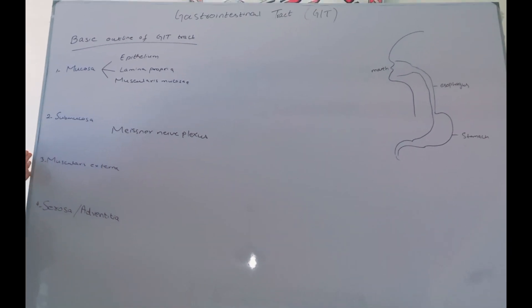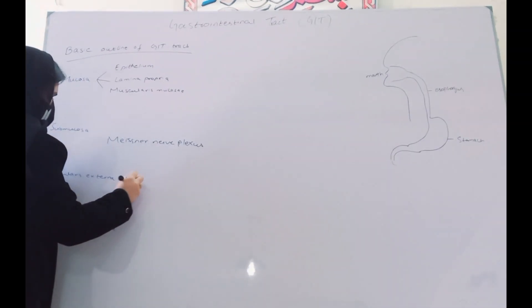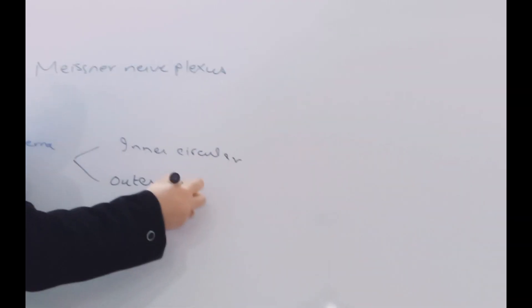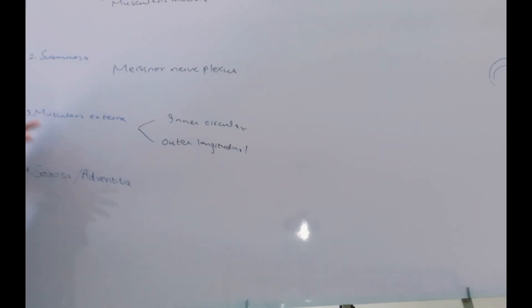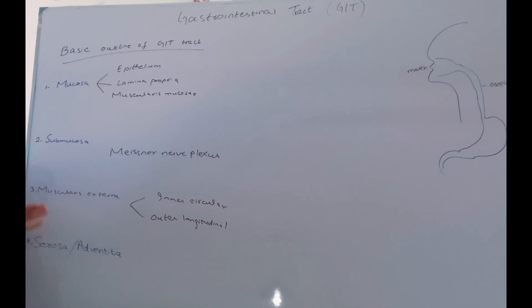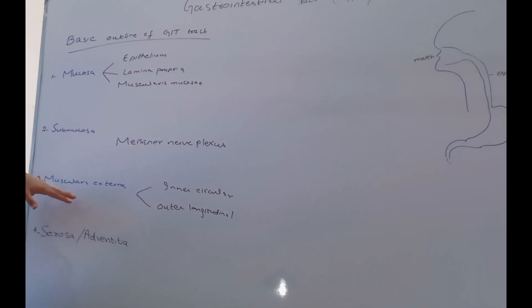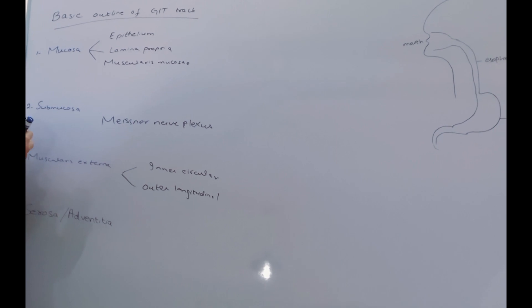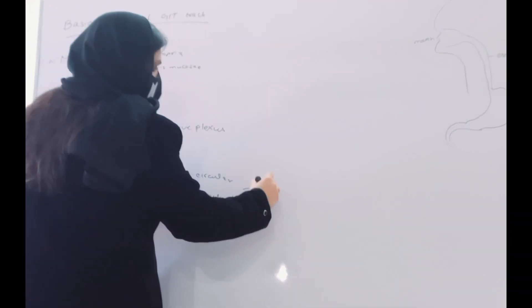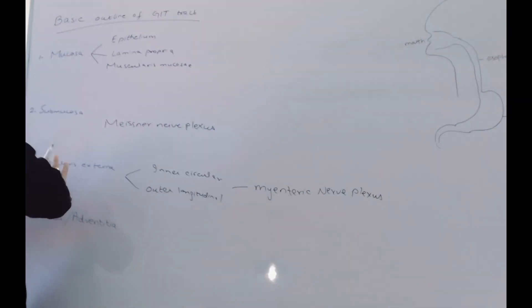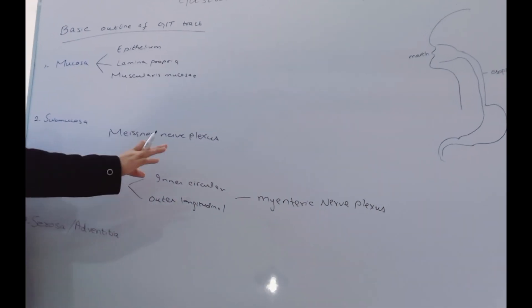The third layer is the muscularis externa. It basically consists of two layers: an inner circular and an outer longitudinal layer. In the GIT tract you will find inner circular and outer longitudinal layers of muscles — it can be smooth muscle or skeletal muscle, varying in different locations. Importantly, you will also find a nerve plexus located between the inner circular and the outer longitudinal layers. This nerve plexus is known as the Myenteric nerve plexus, also known as the Auerbach's nerve plexus. Both names refer to the same plexus.